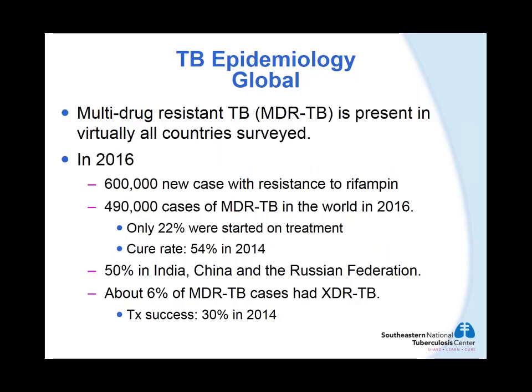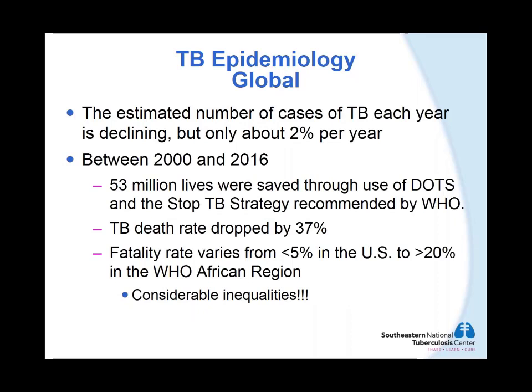Multi-drug resistant TB is present in virtually all countries surveyed by the WHO. 600,000 new cases are resistant to rifampin, and of these, 490,000 were cases of MDR-TB — resistant to rifampin and INH in 2016. More than 50 percent of those were in India, China, and the Russian Federation. Only 22 percent of these cases were started on adequate treatment, and the cure rate is only 54 percent. Even more worrisome is that about 6 percent of MDR-TB cases have what we call extensively drug-resistant TB, or XDR-TB, with a success rate of only 30 percent in 2014.